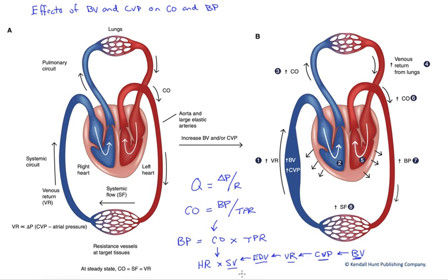The Frank-Starling mechanism is really a length-tension relationship for cardiac muscle. The more we stretch cardiac muscle, the greater degree of overlap of thick and thin filaments within our sarcomeres, and the harder contraction we get, increasing our cardiac output.